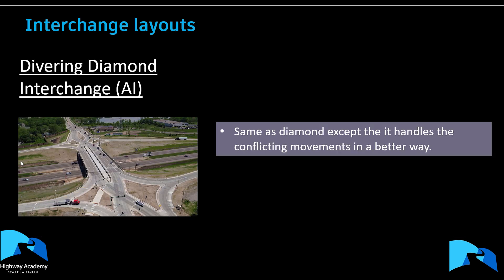The diverging diamond interchange is similar to the standard diamond but handles conflict points more intelligently. Rather than the two arms continuing parallel, the road swerves and then swerves back. This allows traffic coming from the same direction to interface with traffic moving in the same direction, which is very safe and good for both traffic and pedestrian movement — a much safer design overall.